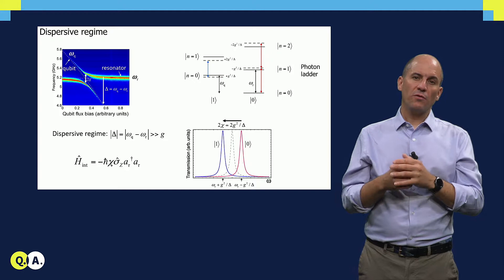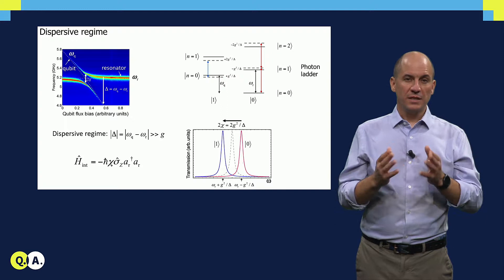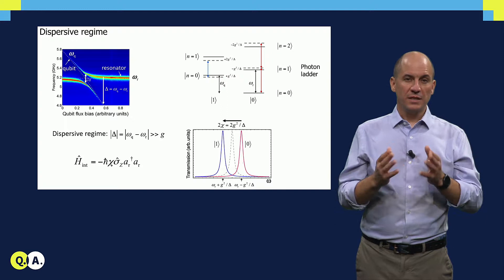We can interrogate the resonator, and thereby also the qubit, by measuring the transmission properties of a microwave pulse applied to the feed line with a frequency close to the bare fundamental. Niels will cover this in greater detail in his video. Moving on.